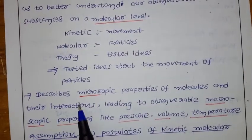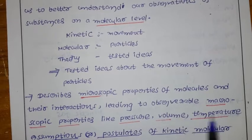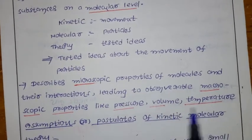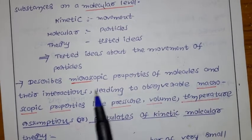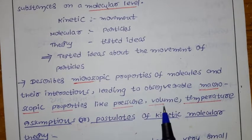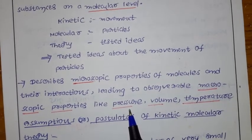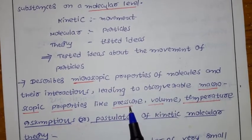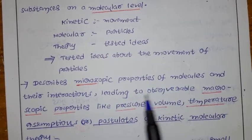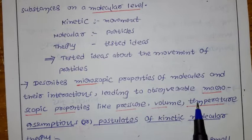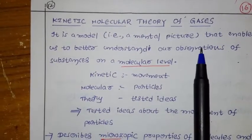The kinetic molecular theory describes the microscopic properties of molecules and their interactions, leading to observable macroscopic properties like pressure, volume, and temperature. 'Macro' means big and 'micro' means small. So the macroscopic properties you observe — for example, the pressure a gas creates — can be understood at the microscopic level using kinetic molecular theory.